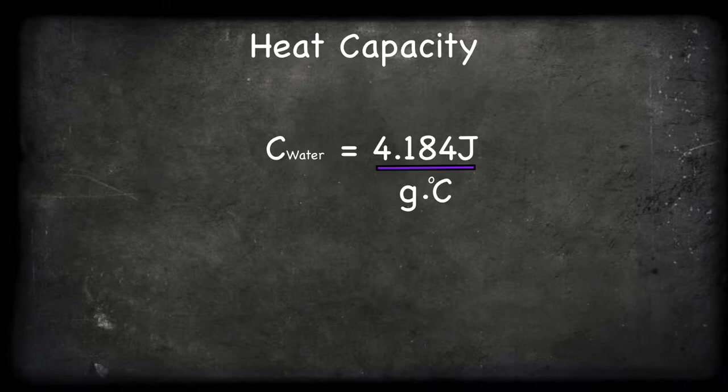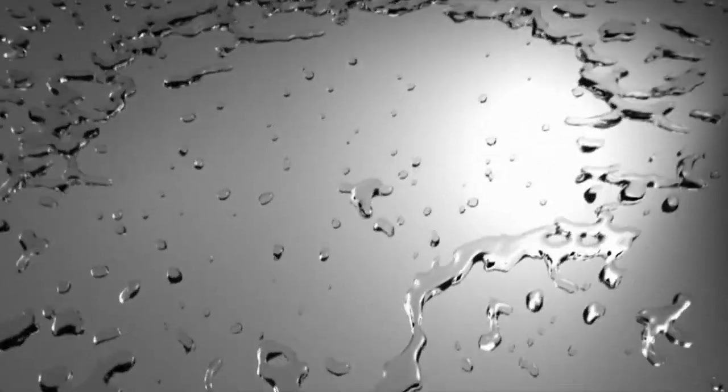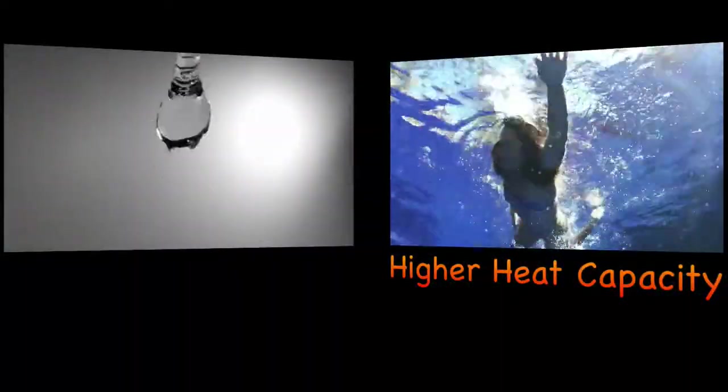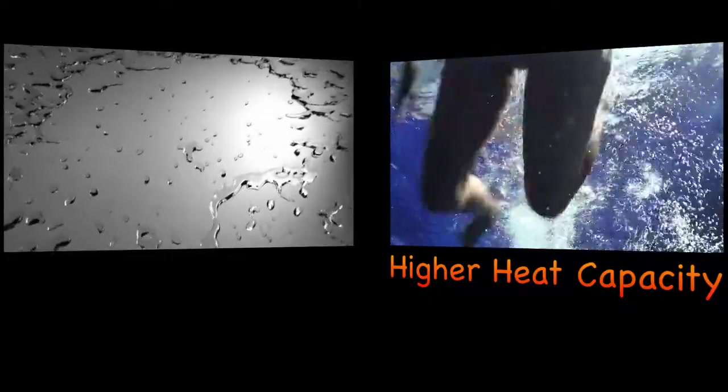With this understanding, it isn't difficult to understand that one drop of water is going to heat up much faster than a whole swimming pool of water. So we could correctly identify that the swimming pool has a much higher heat capacity than the water droplet, even though both of them are made up of water.